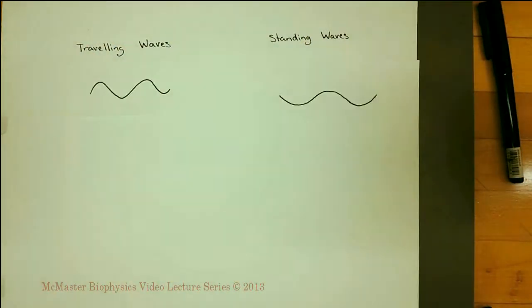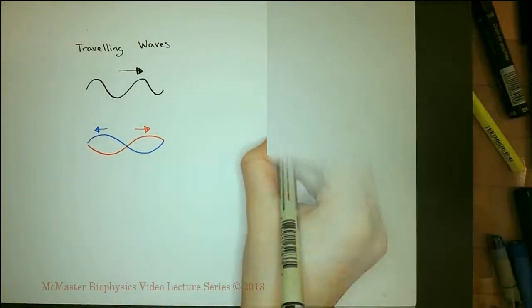Traveling waves move through a medium. Standing waves stay in the same place. Standing waves are caused by the interference of the reflected and initial waves in a medium.